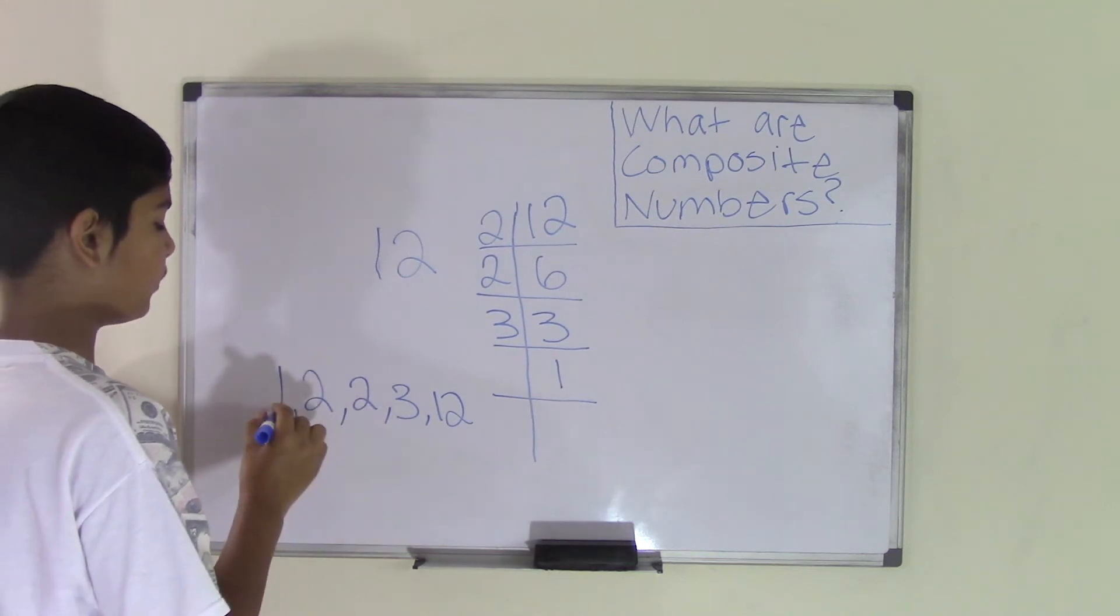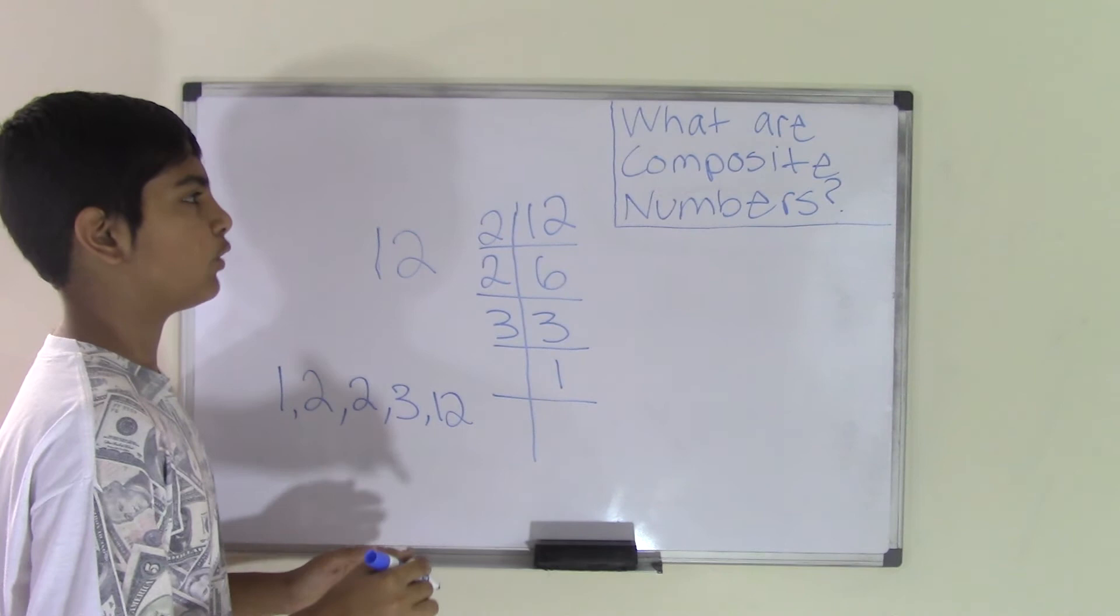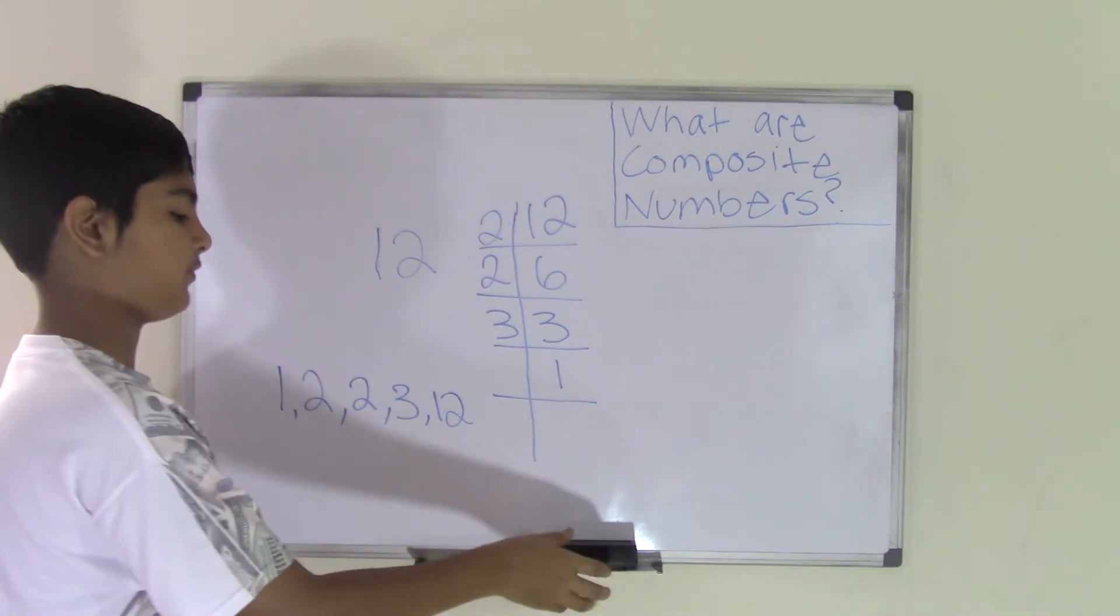So now we have 1, 2, 3, 4, 5 factors of 12. So the number 12 is a composite number. Let's try another number for example.